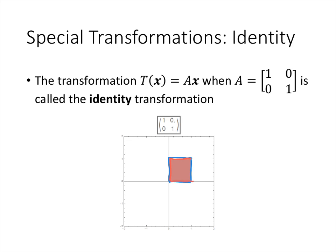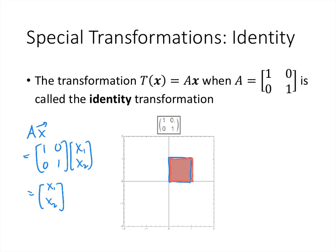We can verify this: if the matrix is the 2x2 identity matrix [1, 0; 0, 1] and we multiply it by any vector [x1, x2], we just get [x1, x2] back. This is called an identity transformation — when we plug any vector into this function, we get that same vector back. It's a very boring function because it doesn't actually do anything to the vector x, but it's an important example we'll be talking about more as we go along.